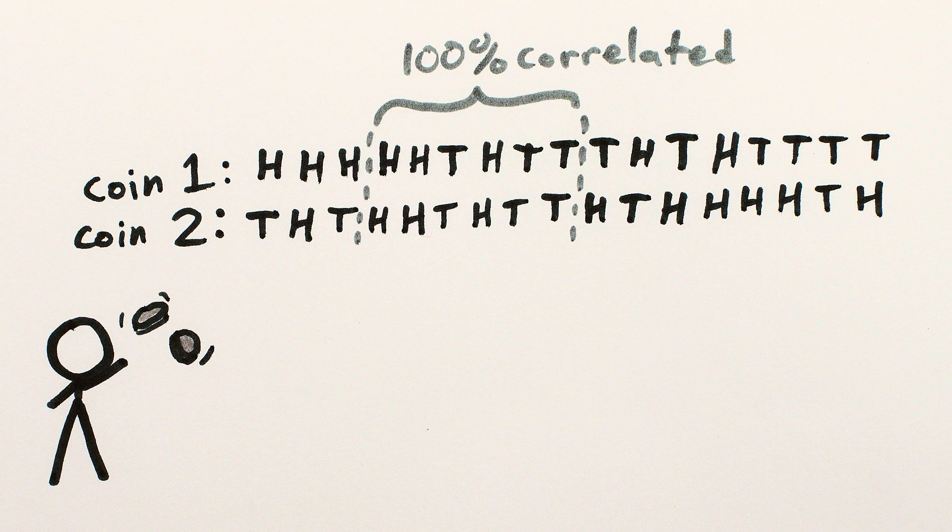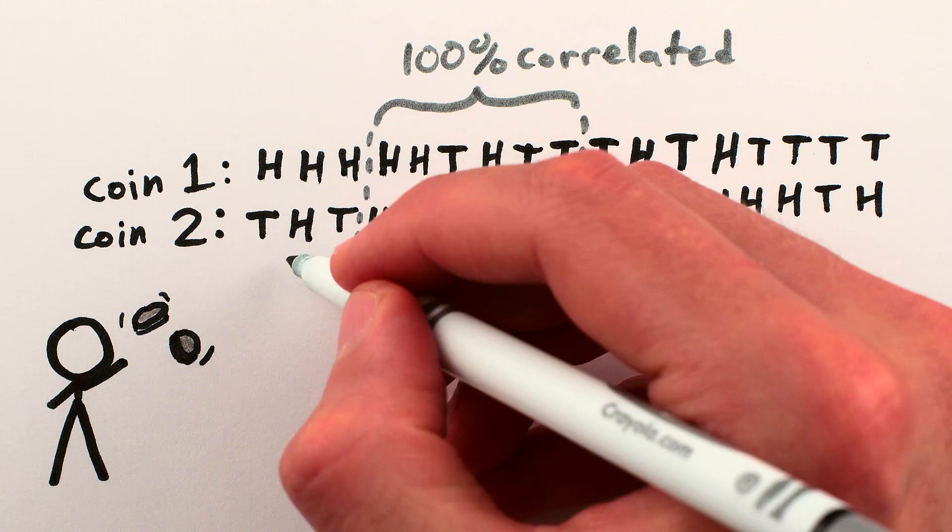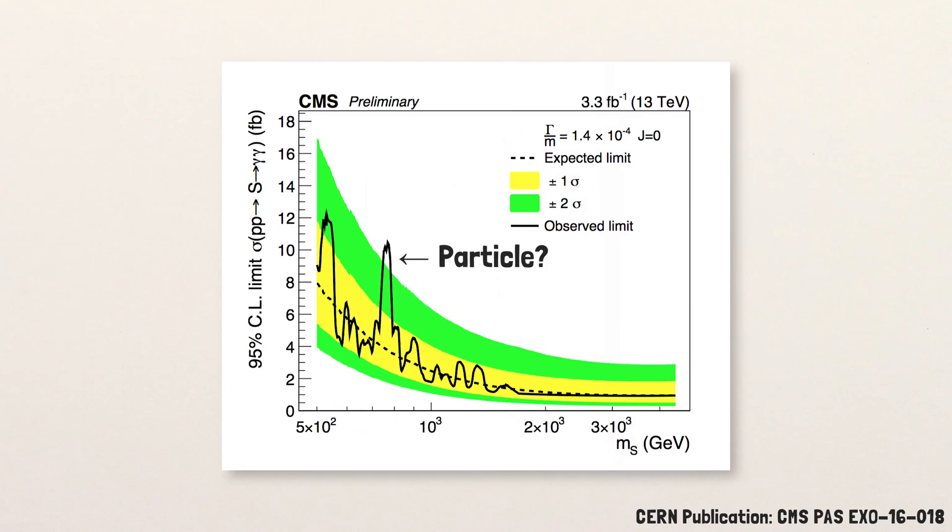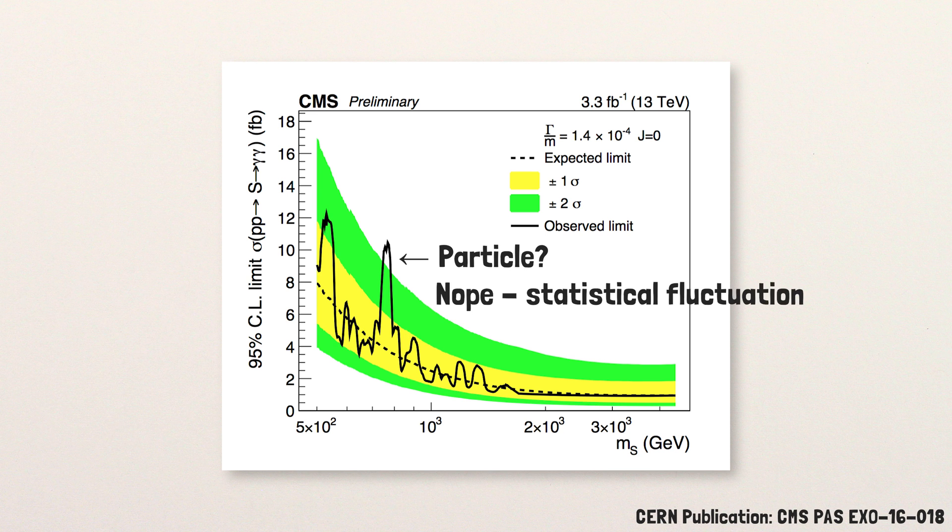But when an apparent correlation is actually random in origin, like in this case, then if you keep looking at larger and larger samples, the correlation should go away. This is why it sometimes looks like particle physicists have discovered a new particle, only for that to go away when they collect more data.